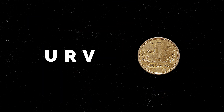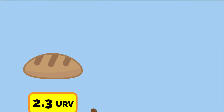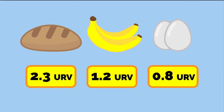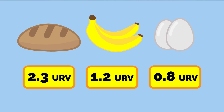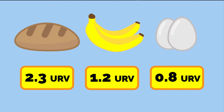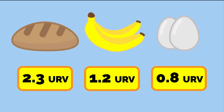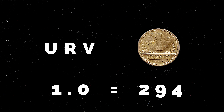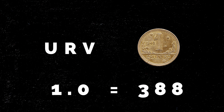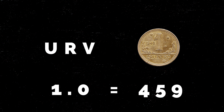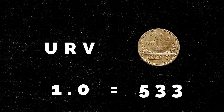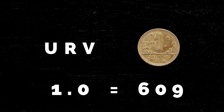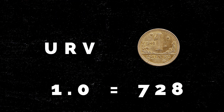Everything would be shown in URV. When you went down to the store, you would no longer see the price constantly increasing — goods would cost the same amount of URV every day. But because URV was not the currency people had, they would look up how many Cruzeiros one URV was worth that day when paying for their goods. And every day the current exchange rate between URV and the Cruzeiro was shown in the newspapers.